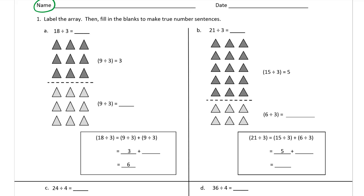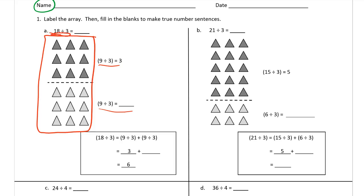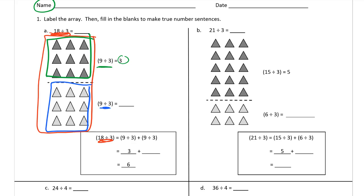We have to label the arrays and fill in the blanks to make true number sentences. Here are the labels for the array. The whole array — I'm going to make this red — that's our 18 divided by 3. This top part of the array, boxed in green, is 9 triangles divided into rows of 3, and it gives us 3 rows. We have the same thing on the bottom, boxed in blue — that's 9 triangles too, same quotient.